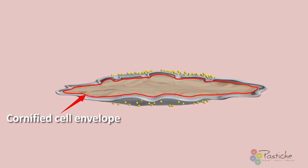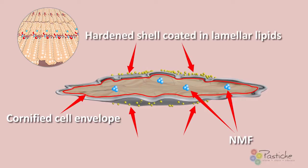The keratinocyte, or now corneocyte, has reached its final destination in the stratum corneum and now plays the vital role as the second in line of skin barrier defence. The corneocyte is the first cell to have contact with the outside environment, and it is this layer that acts as one of the principal defences of the body against injury and the invasion of bacteria. The corneocyte is an integral part of the innate immune system and the physical barrier of the skin, meaning that this cell is the leading cell of the epidermis.